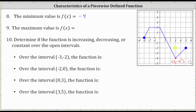Next, we're asked to find the maximum value of the function. We locate the highest point on the graph. In this case, there are several high points — all the points along a horizontal segment have the maximum y-value or function value of positive 2. Therefore, the maximum value is f of x equals 2.